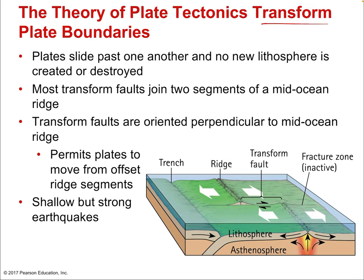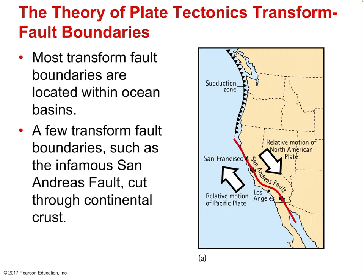Transform fault boundaries involve plates sliding past one another with no new lithosphere created or destroyed. Most transform faults join two segments of a mid-ocean ridge and are oriented perpendicular to it. They create shallow but strong earthquakes, often with high frequency. Most transform fault boundaries are in ocean basins, but a few occur on land — such as the famous San Andreas Fault in California.